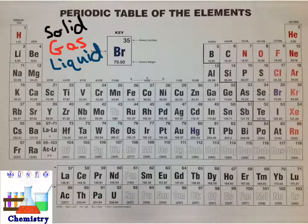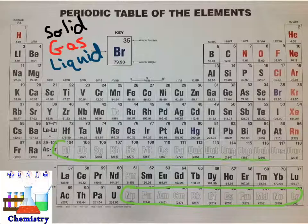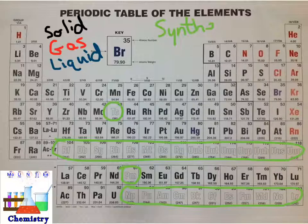You'll also notice that some elements on the periodic table have outlined letters. You find them mostly from uranium on up, in the bottom row of the periodic table as well, and also technetium and promethium. These elements are known as synthetics. Synthetic elements do not occur naturally — they are only the byproduct of either a nuclear reaction or using a particle accelerator to smash smaller nuclei together to create a larger nucleus, so they are only created artificially in a laboratory.